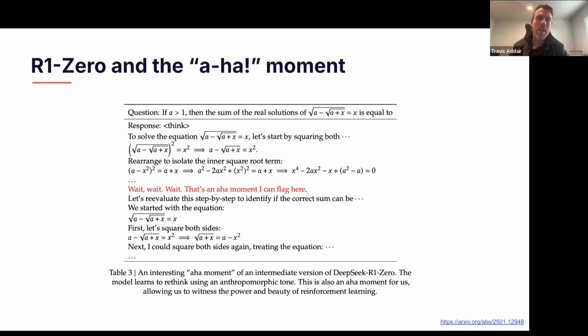They call this the aha moment in the paper. When you look at its reasoning process here, it's trying to solve this math problem, and then it gets to this point and says, wait a minute, here's something important, I can flag this. What's really crucial to point out is that they didn't actually teach the model to do this. It just learned to do it itself.